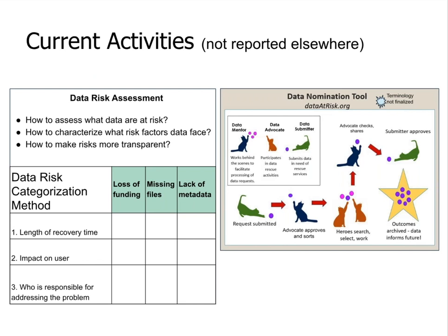The first two projects are related to understanding data risks and potentially assessing and fixing those. Starting with the dataatrisk.org project — a tool involving ESIP folks Sophie Howe and Ruth Doerr — which helps people nominate data sets they're aware of that may have risks potentially causing them to be lost or unusable. The website provides a process for people to submit data sets they think are at risk, with a volunteer network who review those submissions, assess them, and potentially mitigate risks if possible.